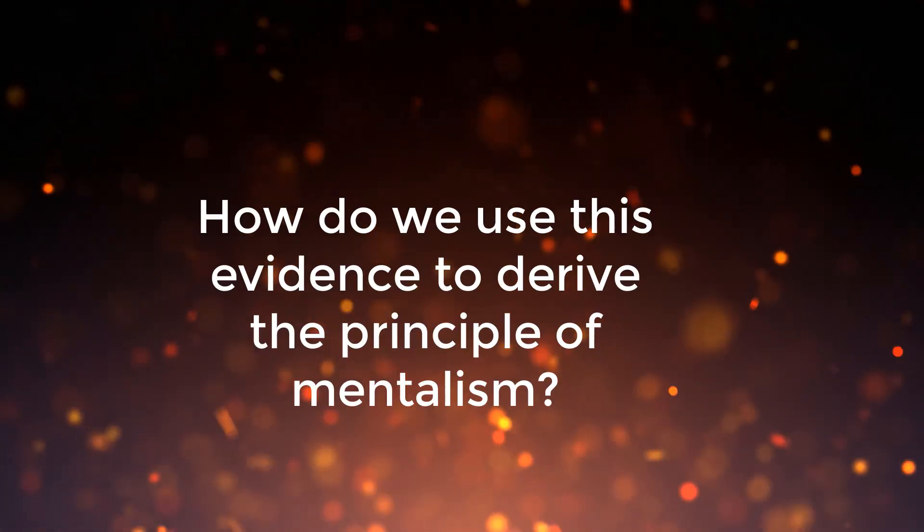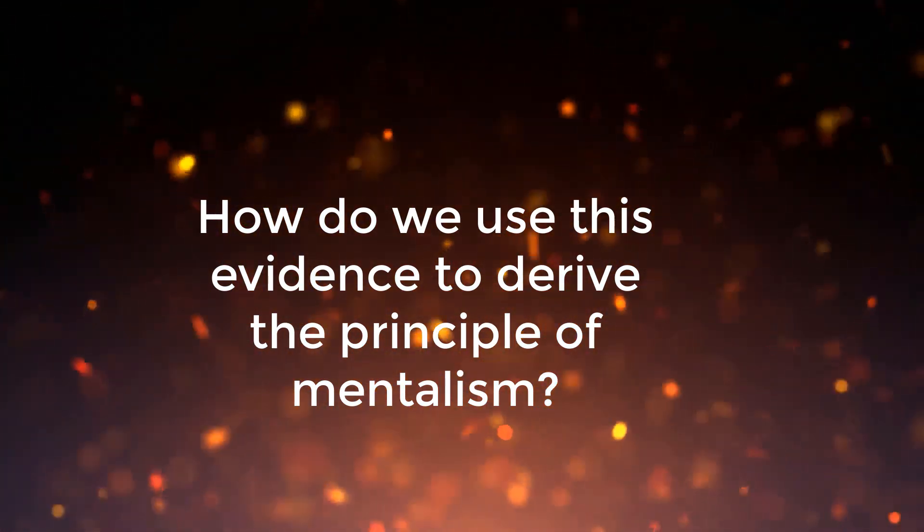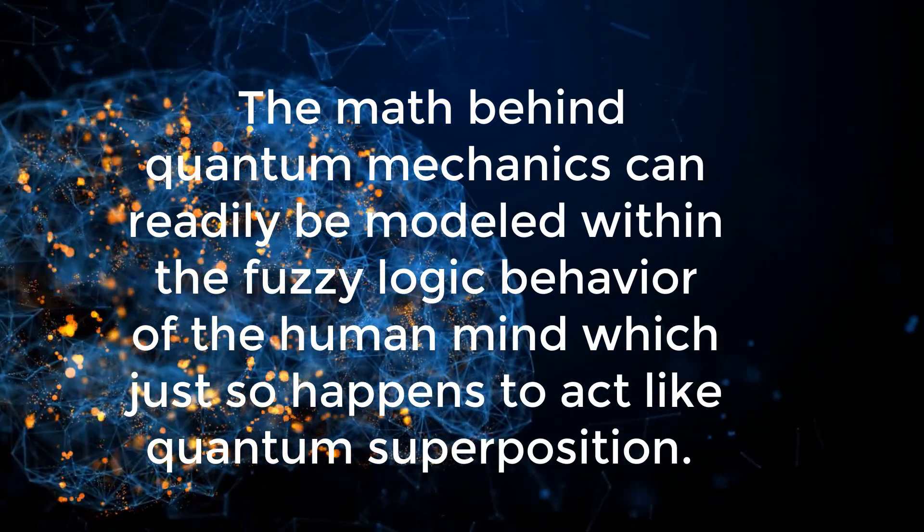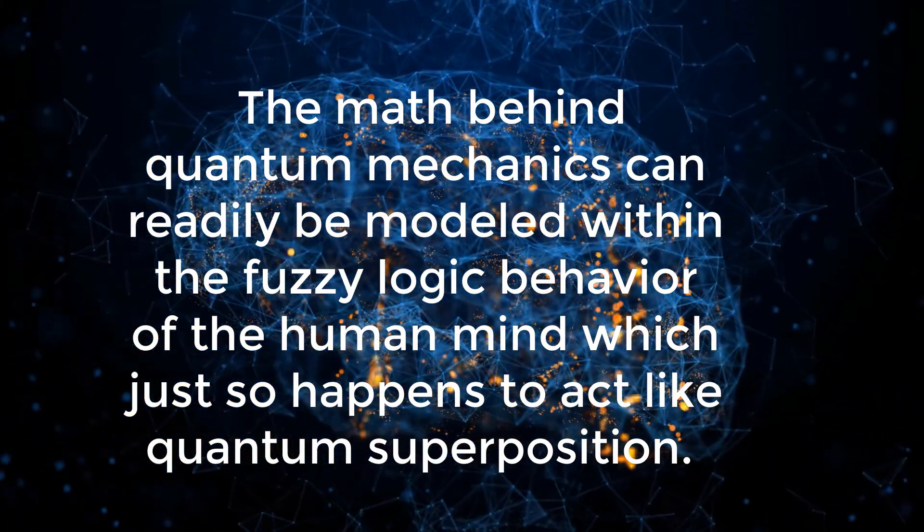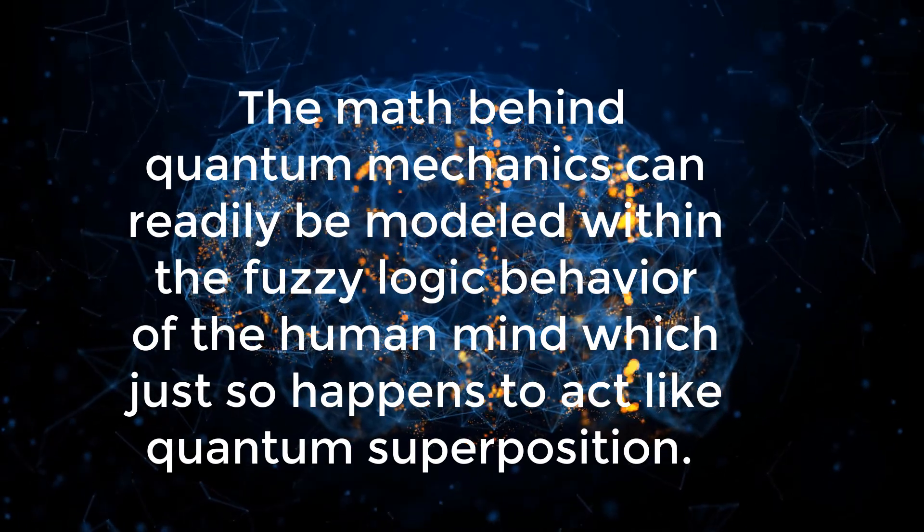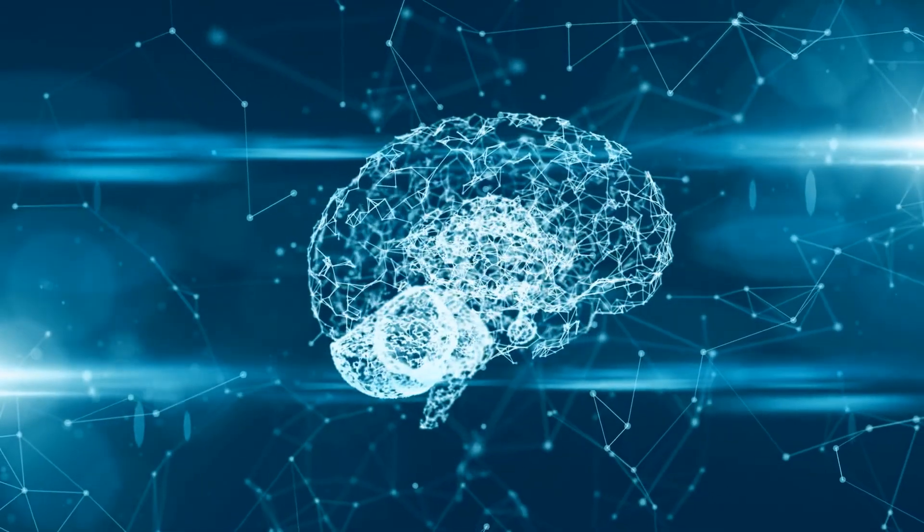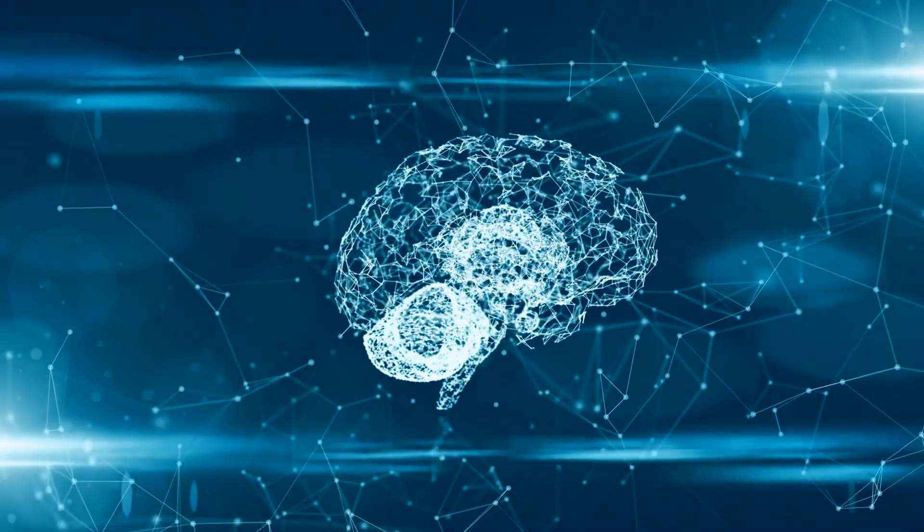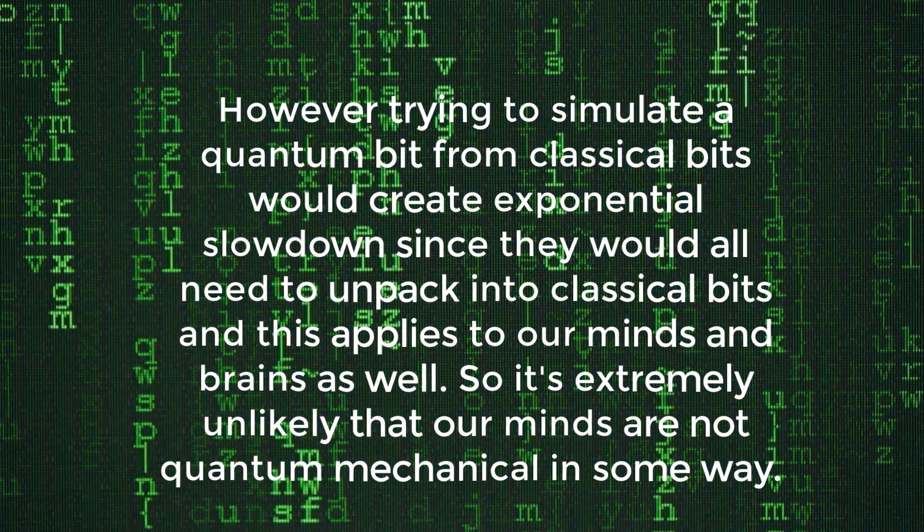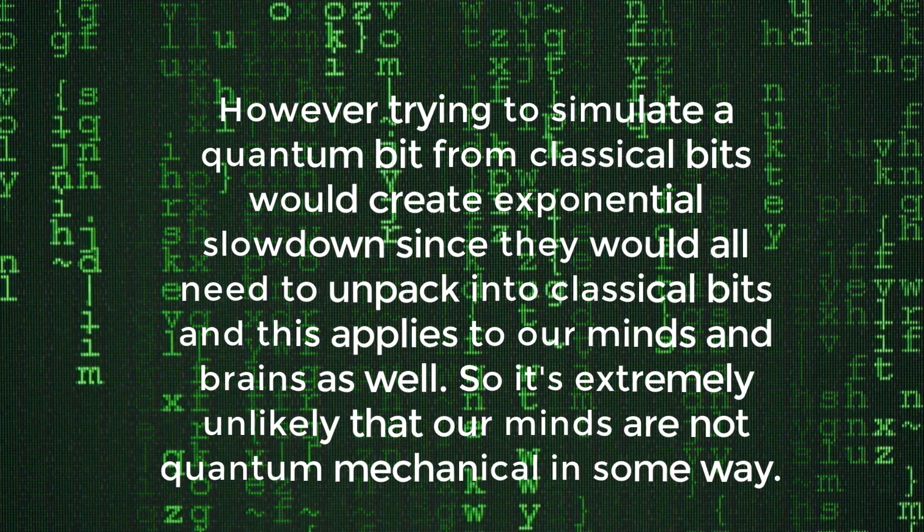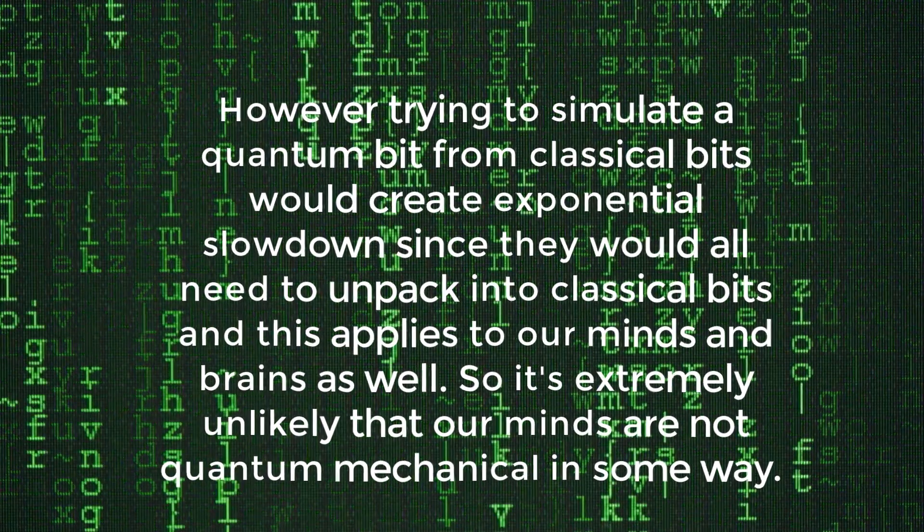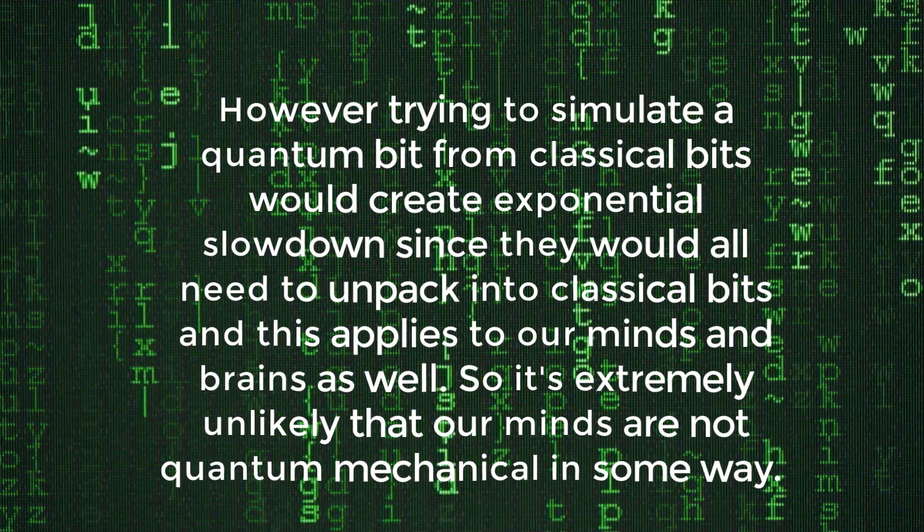Now, the question is, how does this evidence derive the principle of mentalism? Well, the things that we have gone over so far is only half of the picture. The other half of the picture has to do with the larger field of quantum cognition. This first arose with the realization that the math behind quantum mechanics can readily be modeled within the fuzzy logic behavior of the human mind, which just so happens to act like quantum superposition. Some may try to argue that while it's true that our decision making can be modeled quantum mechanically, that doesn't mean that our minds are actually quantum mechanical, but are just still classical. However, trying to simulate a quantum bit from a classical bit would create exponential slowdown, since it would all need to unpack into classical bits, and this applies to our minds and our brains as well. So, it is extremely unlikely that our minds are not quantum mechanical in some way.